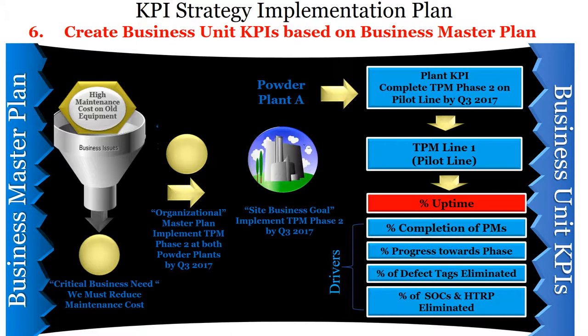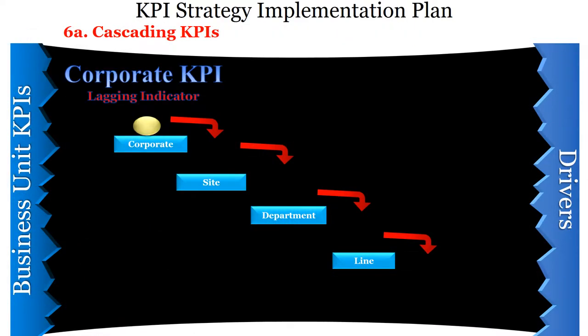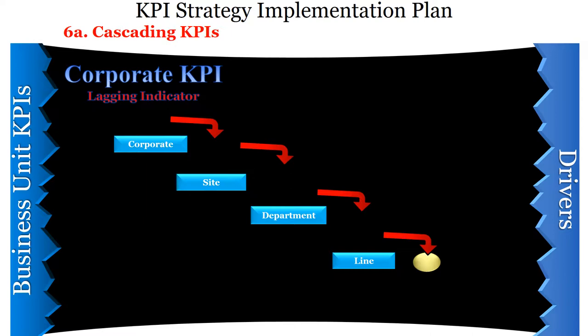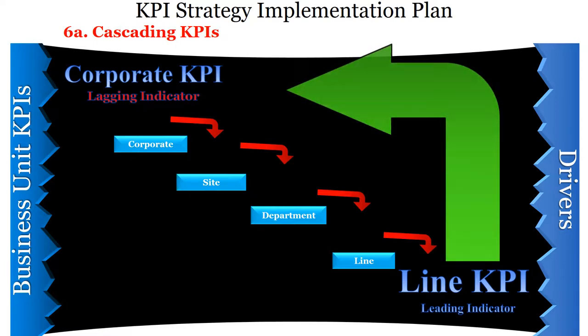The key insight is that as you drill down from top corporate KPIs to bottom line KPIs, you can see the cascading effect, like a ball rolling downhill. With each turn, the KPI becomes more and more defined until we reach a leading indicator that is proactive in nature. If we do A, B, C, then we will satisfy this KPI for this shift, this day, this week, etc., until we successfully obtain our main objective.